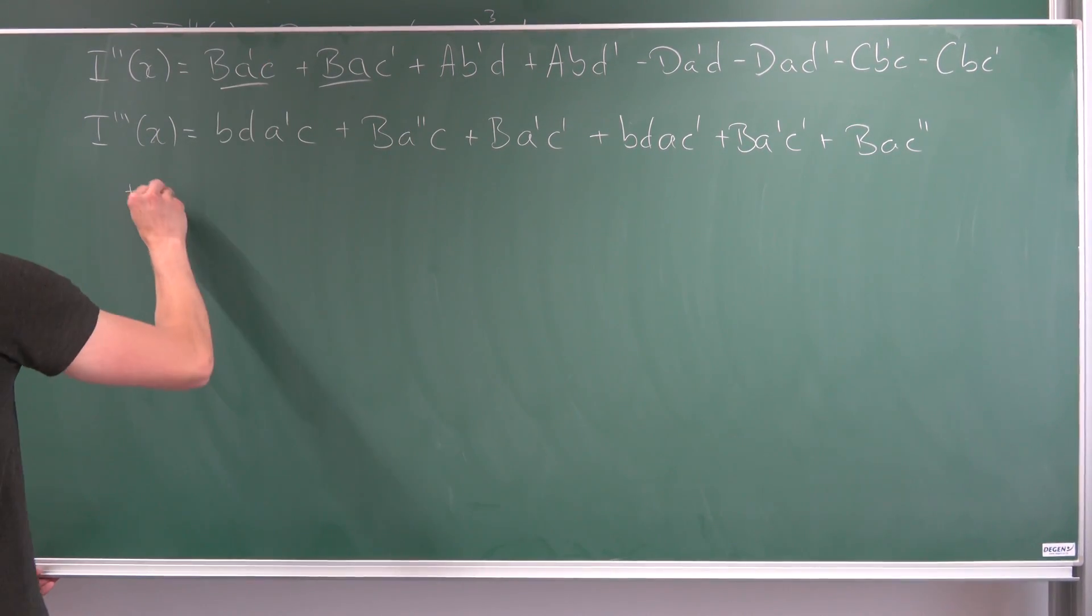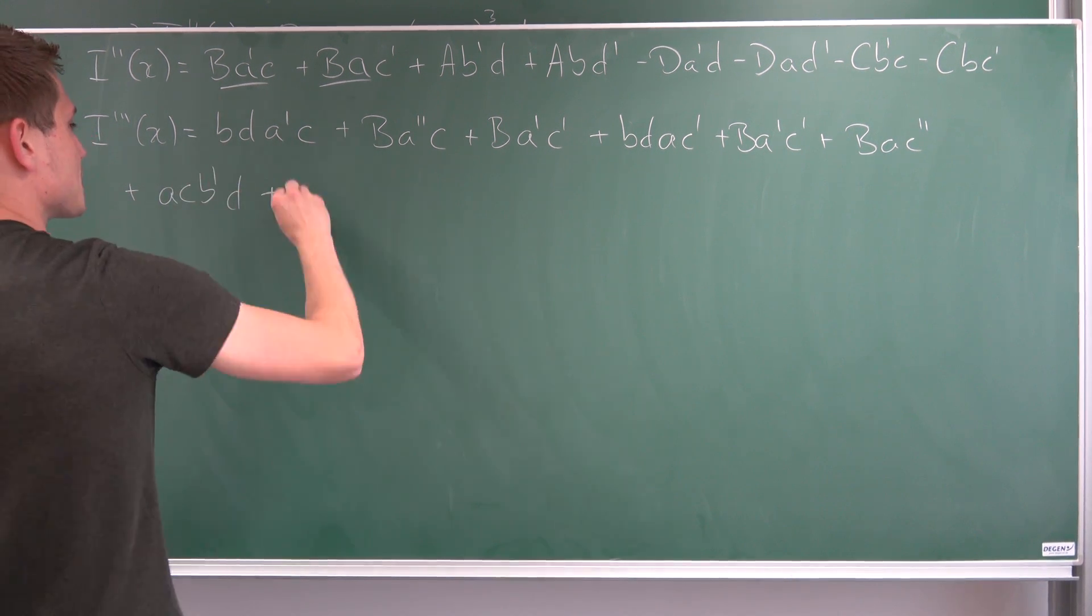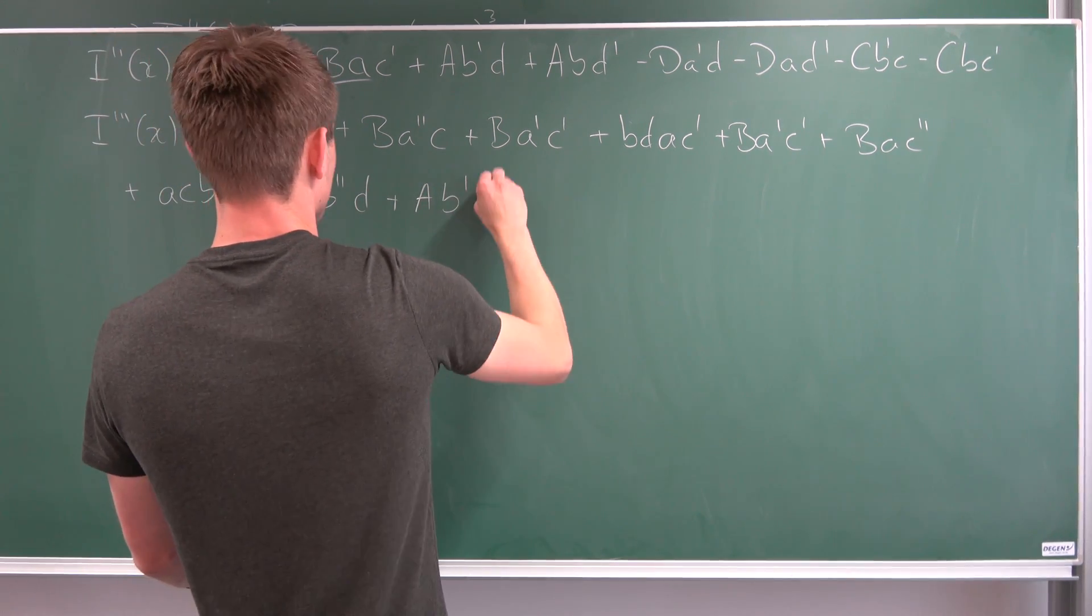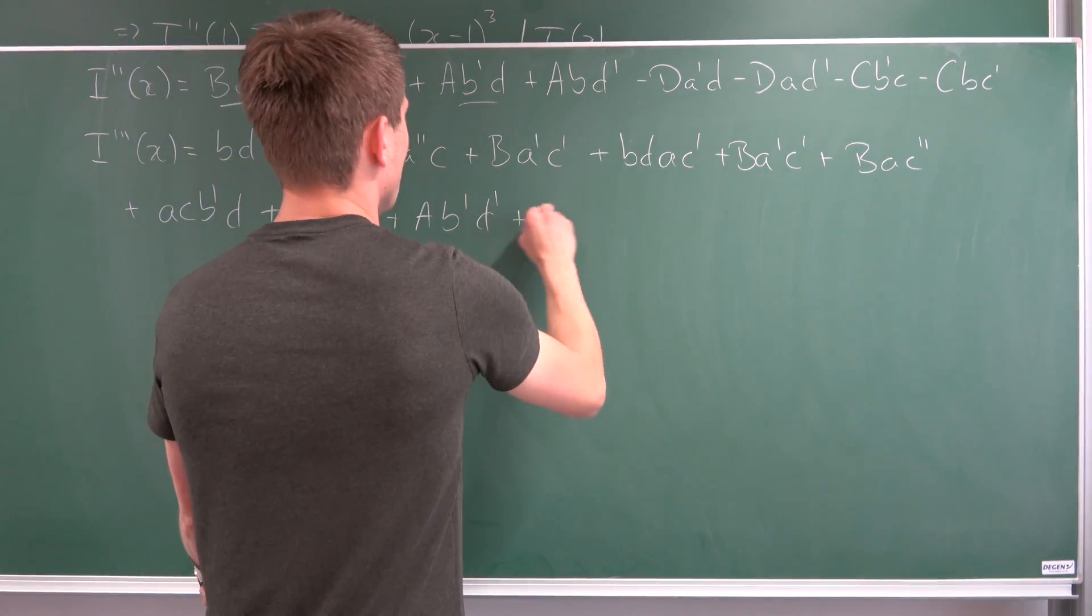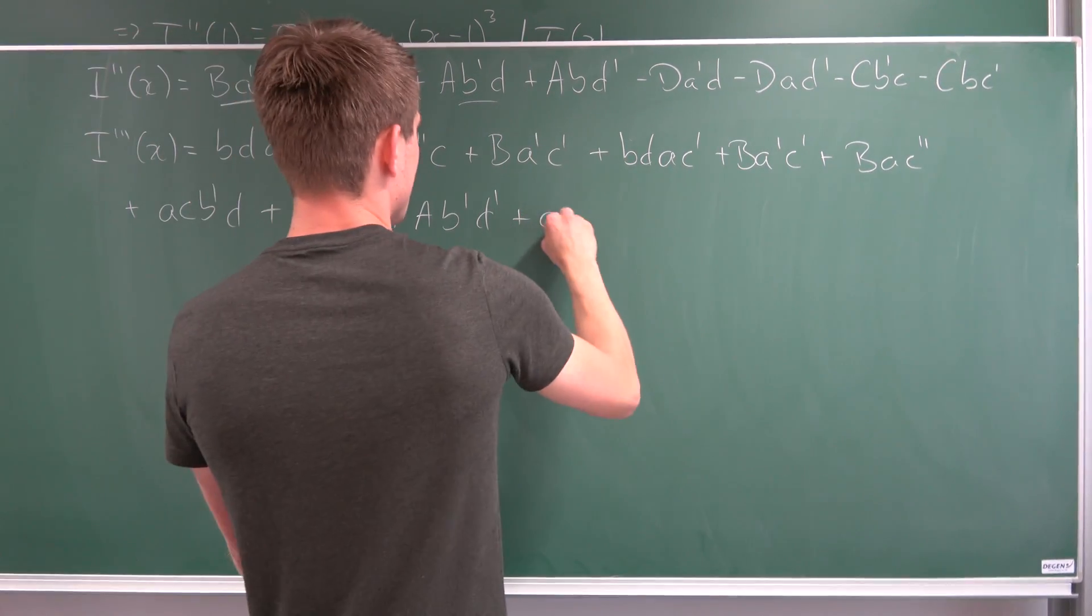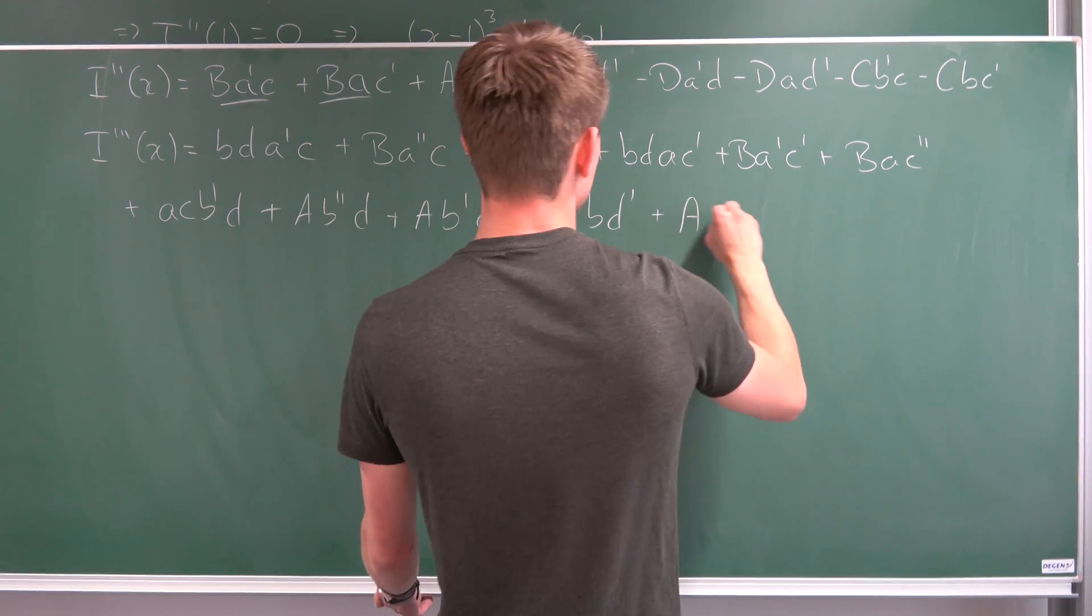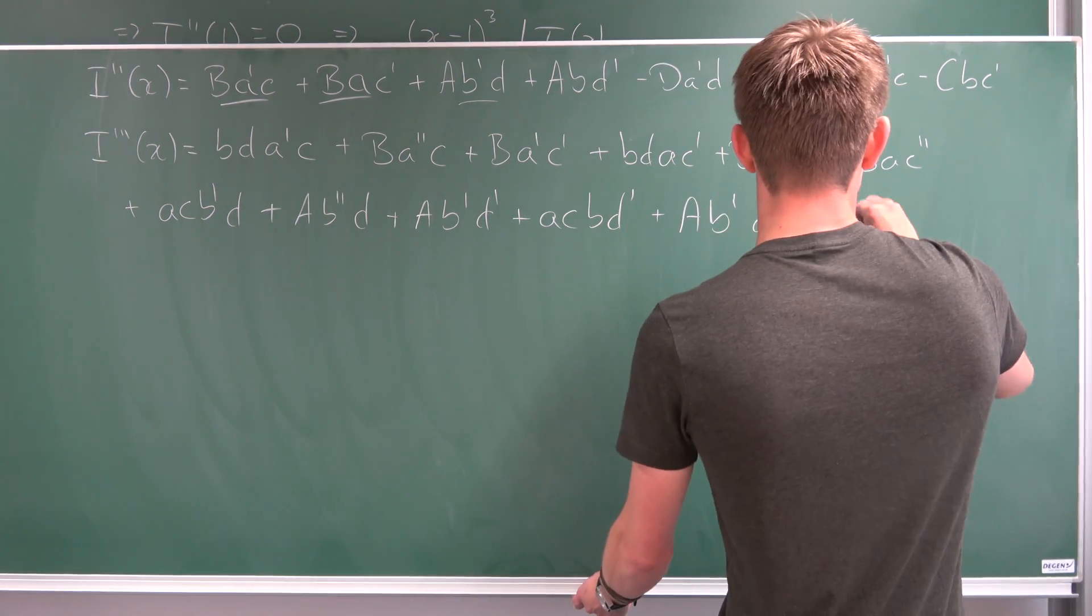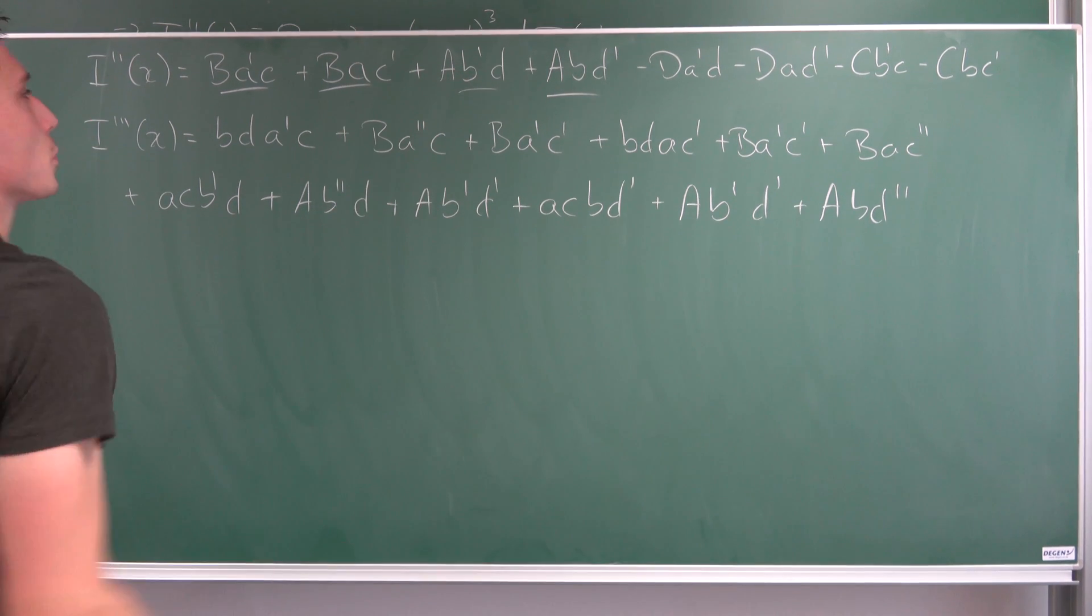Plus, so A differentiated is A times C B prime times D plus A B double prime D plus A B prime D prime. Okay, next one plus A differentiated is A times C B times D prime plus A B prime D prime plus A B D double prime. So we are halfway through.